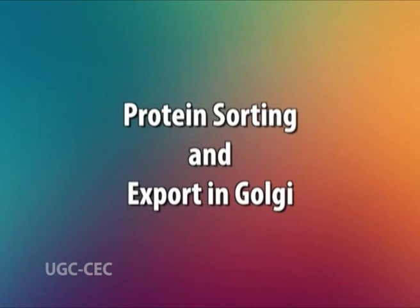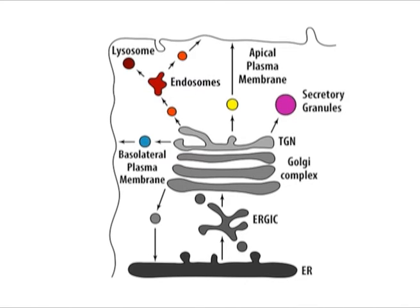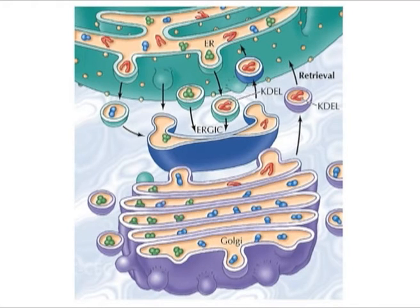Protein sorting and export in the Golgi apparatus: proteins, lipids, and polysaccharides are transported from the Golgi apparatus to their final destinations through the secretory pathway. This involves sorting of proteins into different kinds of transport vesicles, which bud from the trans-Golgi network and deliver their contents to the appropriate cellular locations. Some proteins are carried from the Golgi to the plasma membrane by a constitutive secretory pathway, which accounts for incorporation of new proteins and lipids into the plasma membrane, as well as continuous secretion of proteins from the cell.